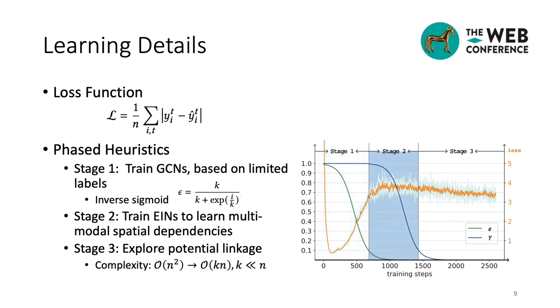In the second stage, we train EINs to learn multimodal spatial dependencies. Similar to the first stage, we gradually make GCNs use the spatial labels inferred by EINs and lead the gradients to the EINs. As we can see, the loss keeps reducing.